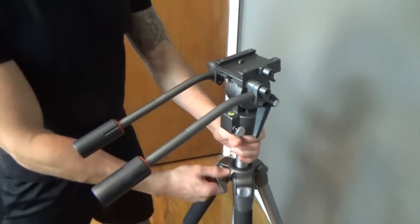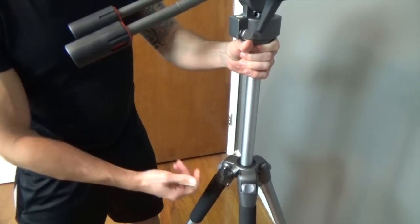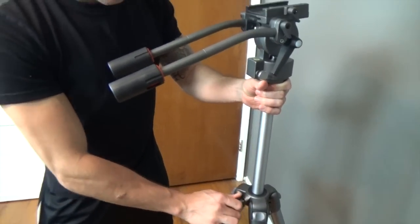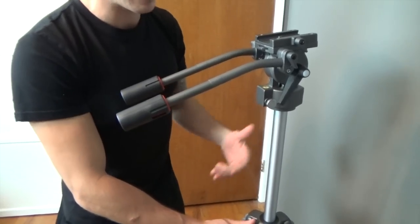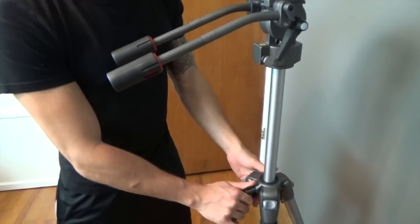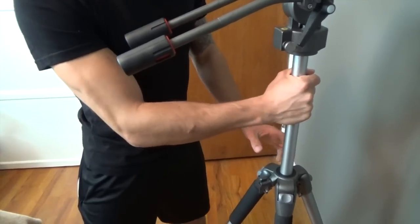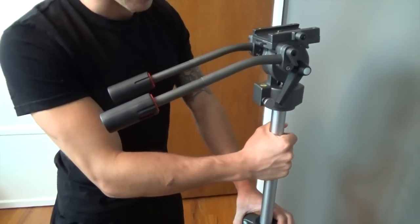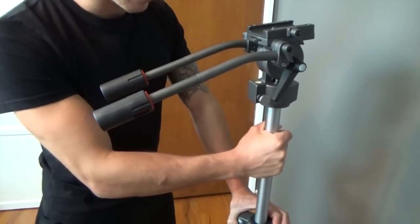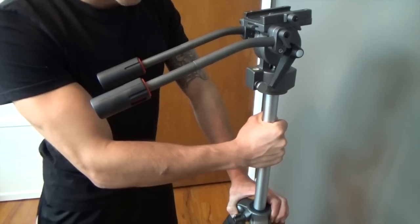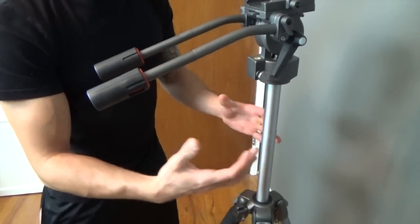And then this also extends up like any other tripod, and it has a stopper so it doesn't allow you to pull the whole thing out, which is handy. Some tripods out there don't have that. And you just tighten it down, very stable even at that point. I'm rocking the whole thing right now, but as far as having any give within the tripod itself, it doesn't.